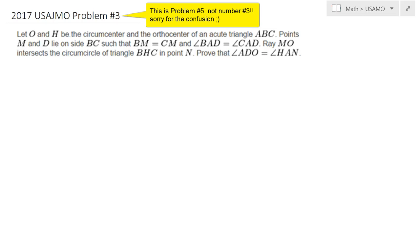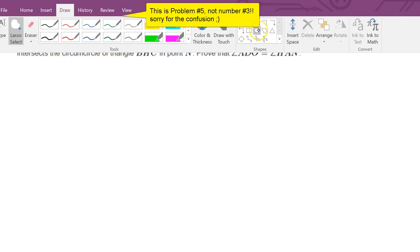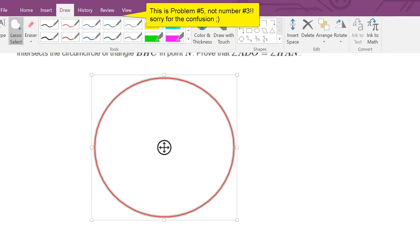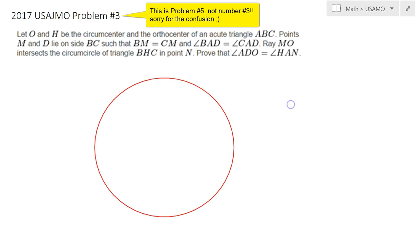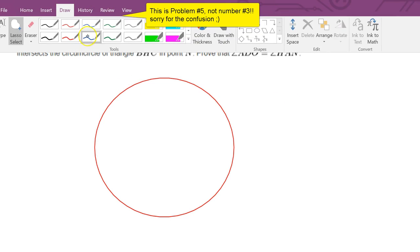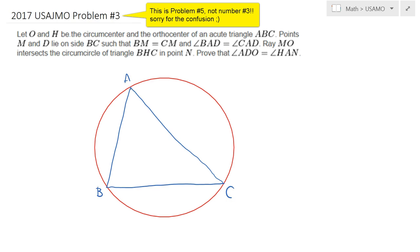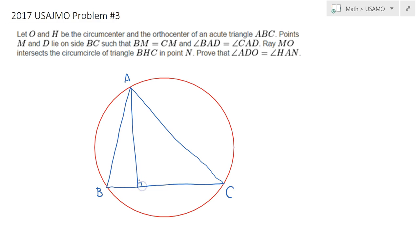Hello everybody. In this lecture we will be solving 2017 USAJMO Problem 3. This is a geometry problem where we are given a triangle ABC with its circumcenter and orthocenter. Let's start by drawing the circumcircle first and then draw our triangle ABC.